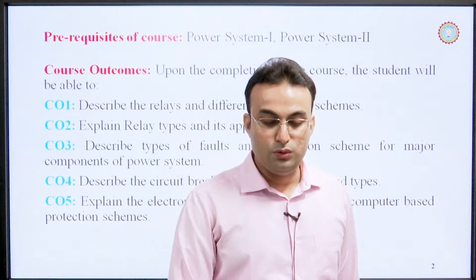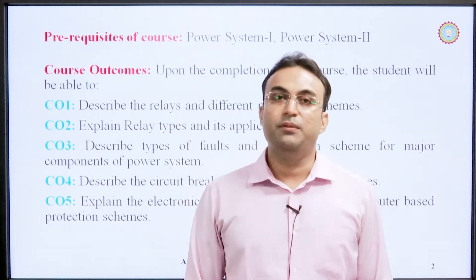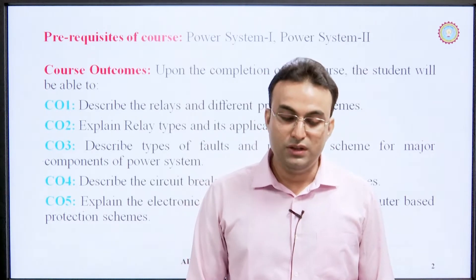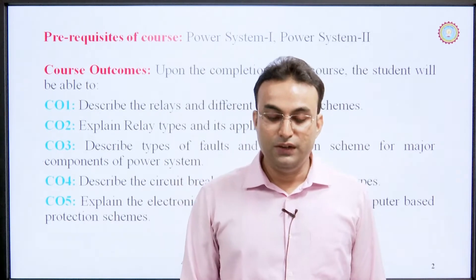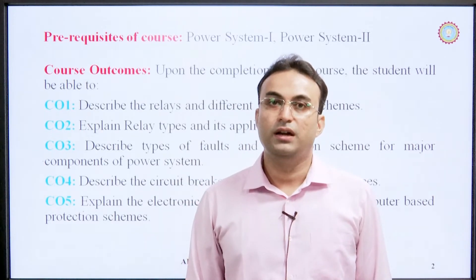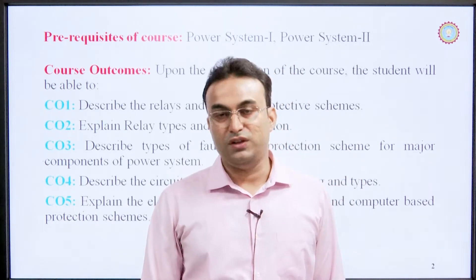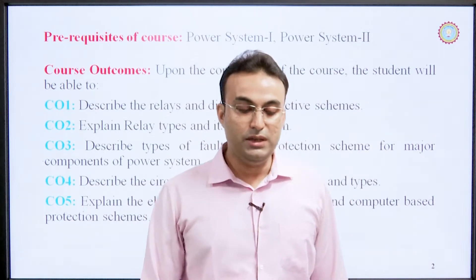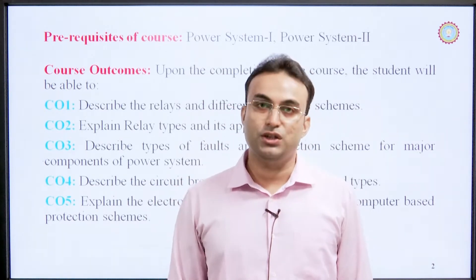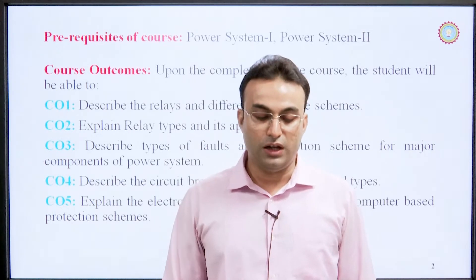The course has five outcomes. The first course outcome is to describe the relay and different protective schemes. The second course outcome is to explain relay types and their applications. These first and second outcomes are basically about the introduction and working of the relay.